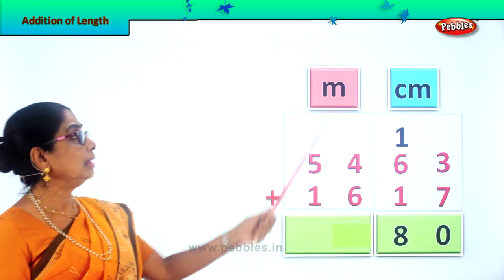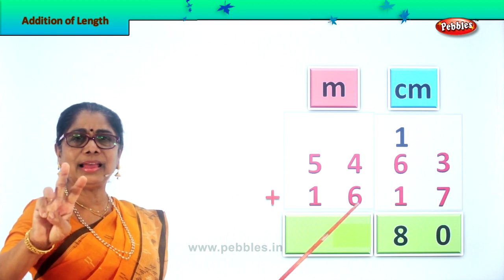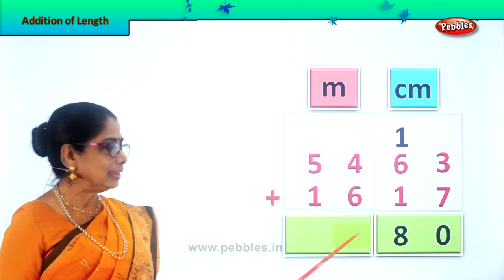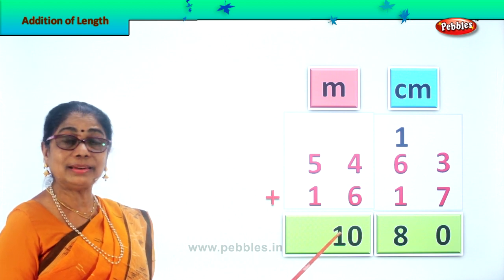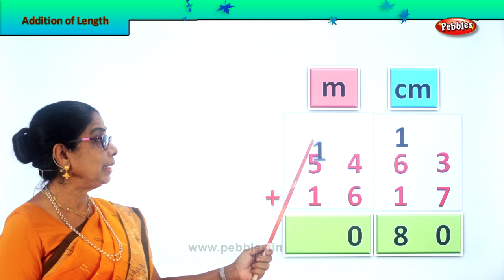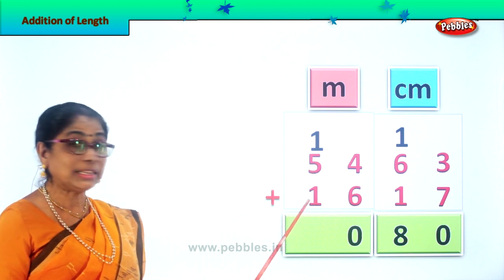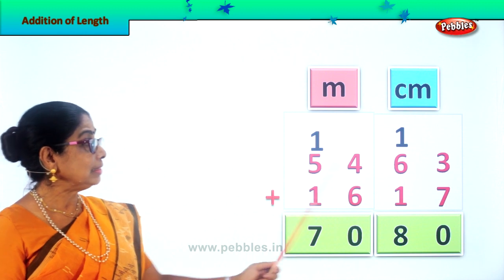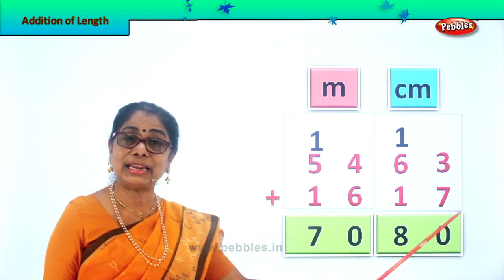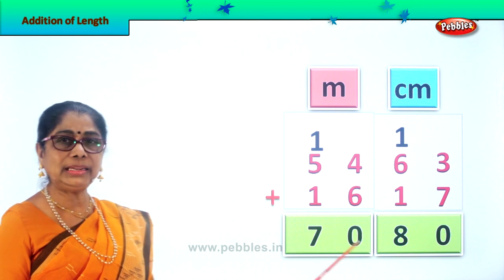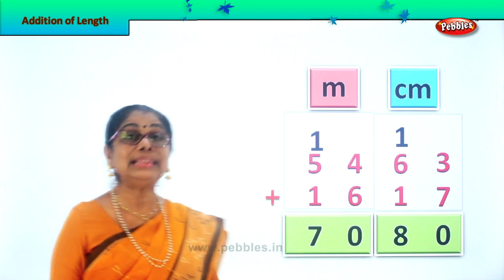Now let's add all the meters. 4 plus 6 is 10. We leave the 0 here and carry this 1 ten to the tens place. Now let's add them all. 1 plus 5 is 6. 6 plus 1 is 7. 54 meters 63 centimeters plus 16 meters 17 centimeters is equal to 70 meters and 80 centimeters.